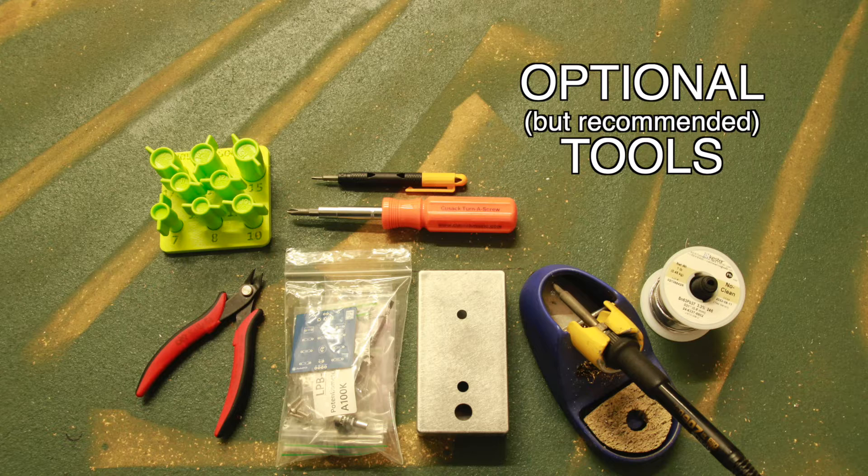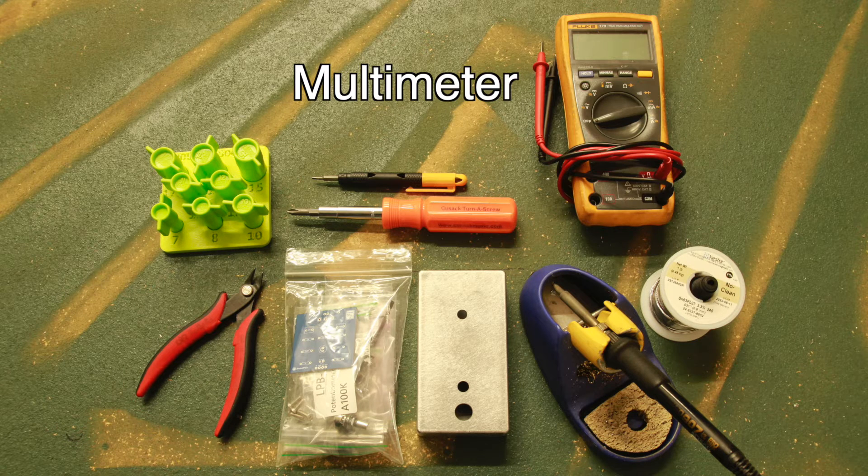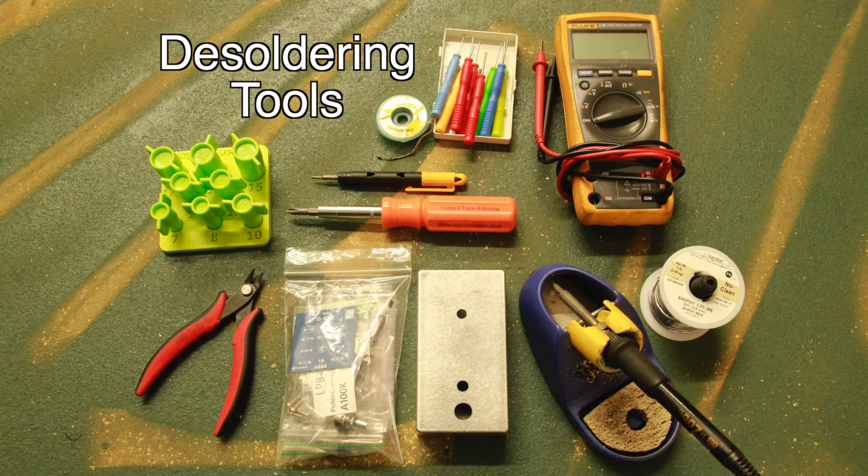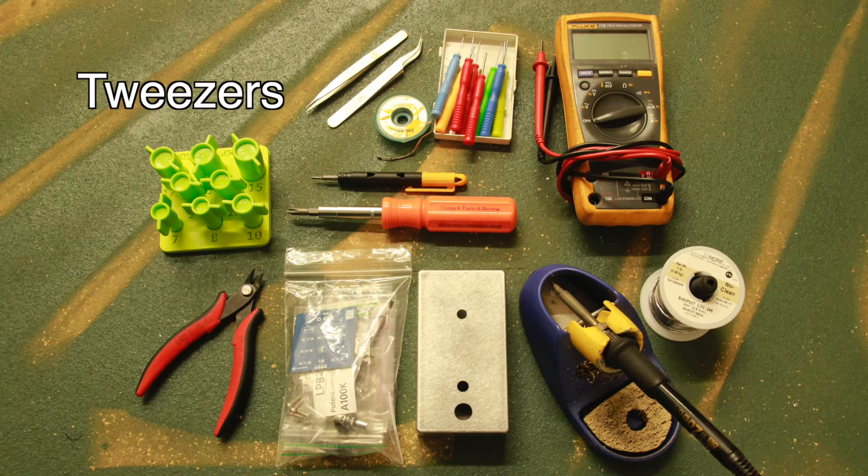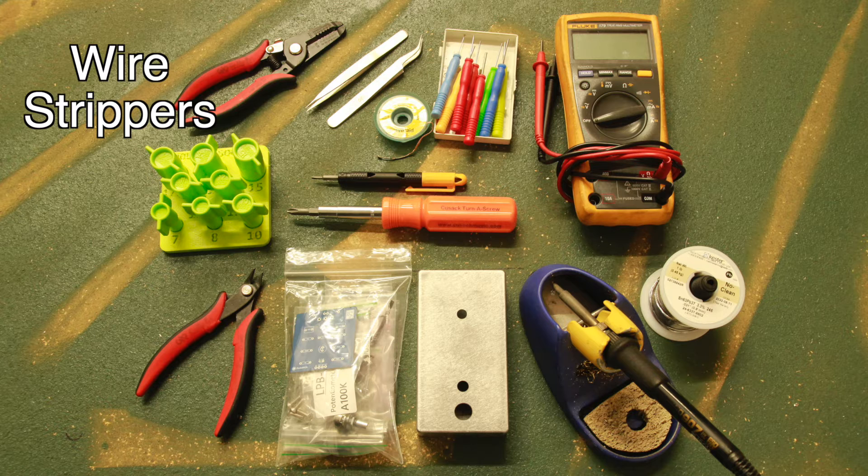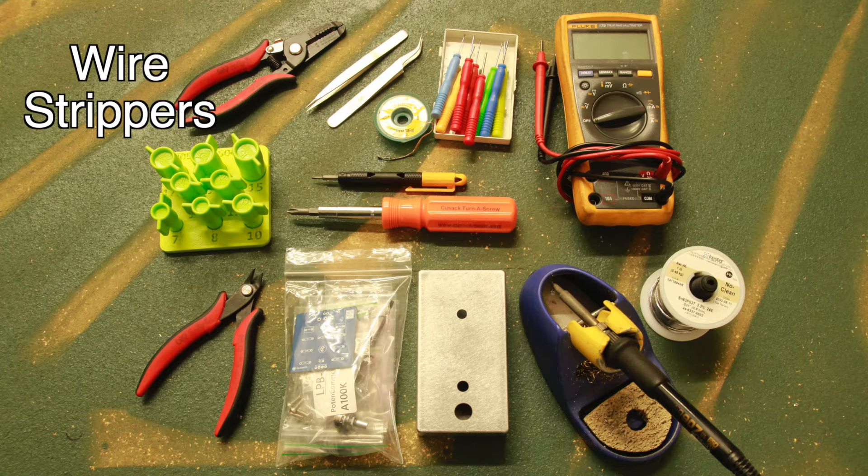Some optional but recommended tools are a multimeter for troubleshooting. De-soldering braid or needles for correcting mistakes. Tweezers for working in tight places. Wire strippers for cutting and stripping wires to custom lengths. Our kits come with pre-cut and pre-stripped wire.